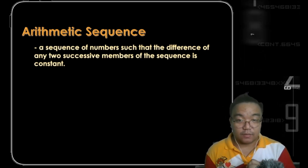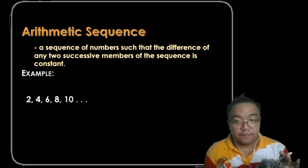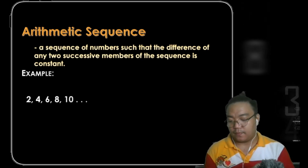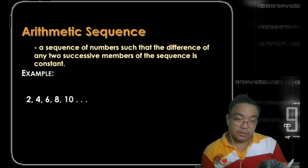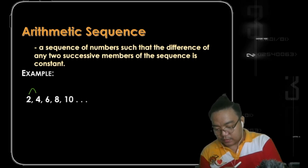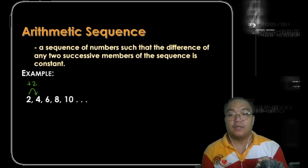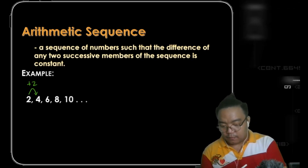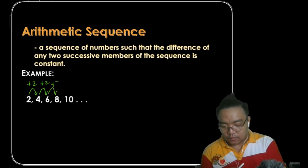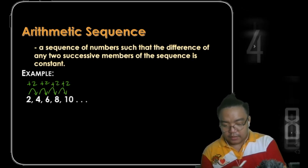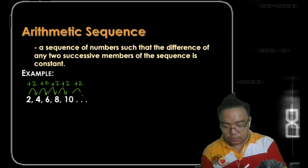For example, we have the first five even numbers. In order to get the next terms, the pattern goes by adding two from the previous term — from two to four, from four to six, we add two, from six to eight, and so on. So it's easy to guess the next one: after 10, plus 2, we get 12.